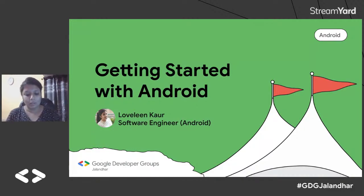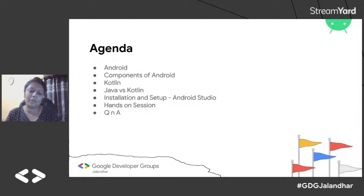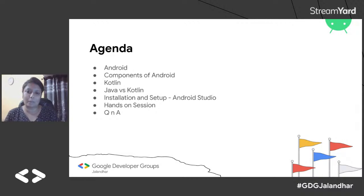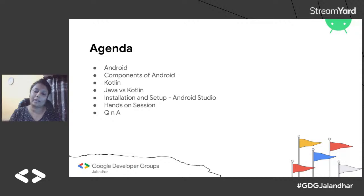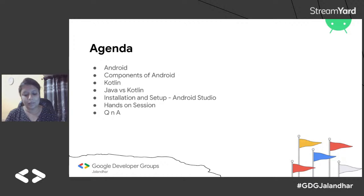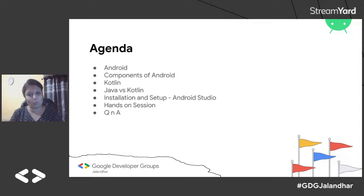Today we are going to talk about Android — basically we are going to discuss what is Android, why we use it, and how many things we can make with it. The session agenda covers: what is Android, how it was developed, who founded it, which company started it, and then the basic building blocks of Android — the components with which we can make Android applications. The third topic is Kotlin, the very trending and hot language in today's IT workplace.